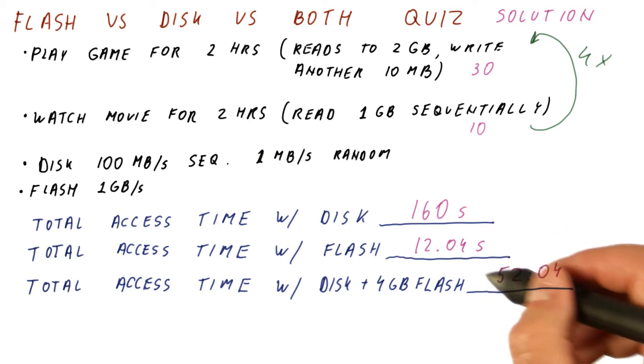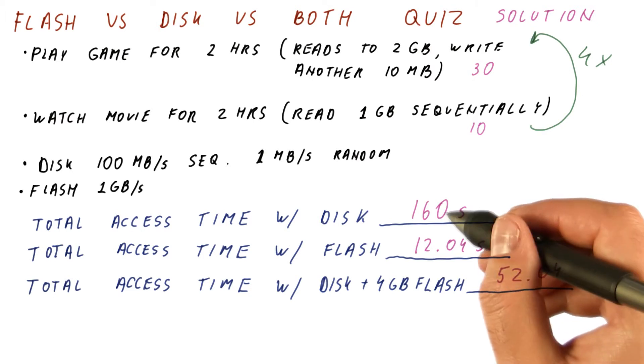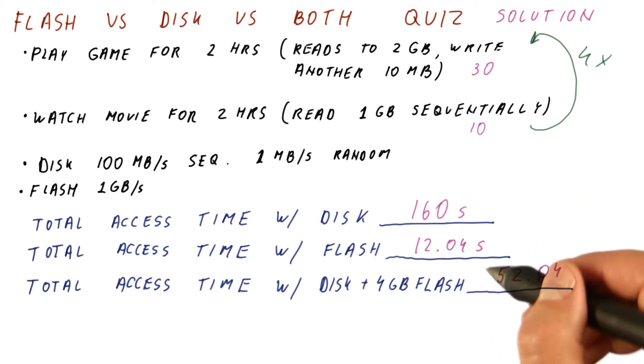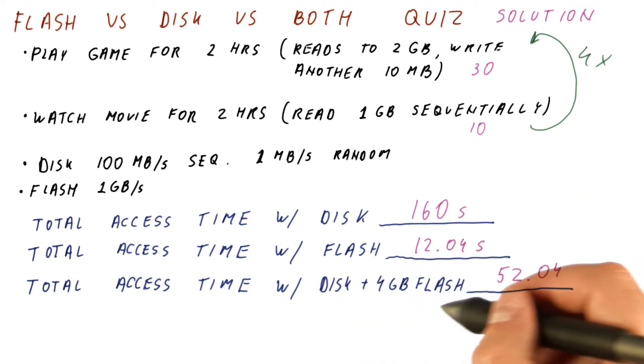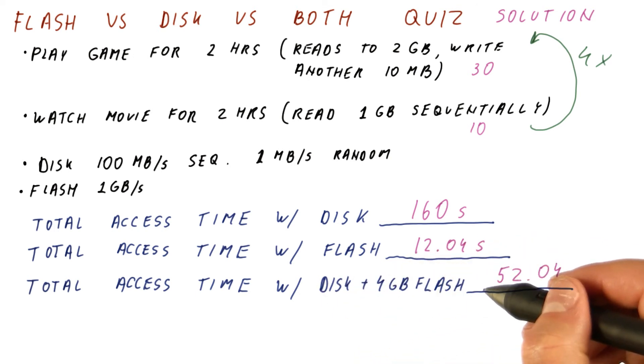So although it's slower than pure flash, it's still much faster than pure disk. And this is about as costly as a single disk, because 4 gigabytes of flash are not going to cost us that much.